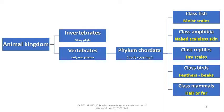As you know from your study in previous videos, vertebrates are divided into five classes: class fish, class amphibia, class reptiles, class birds, and class mammals. In this video we will concentrate on class amphibia.